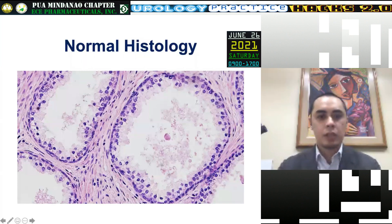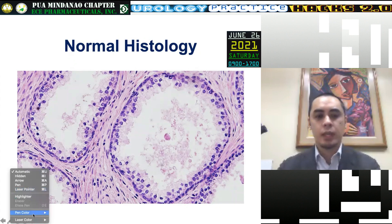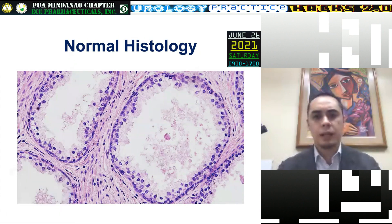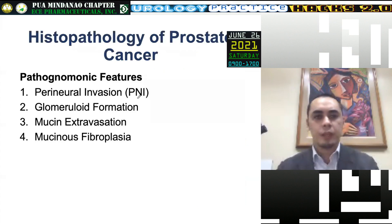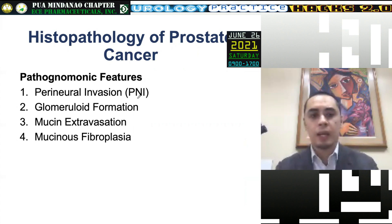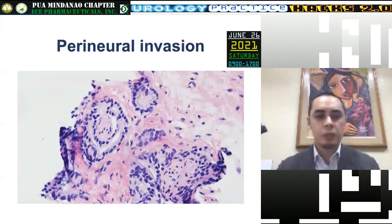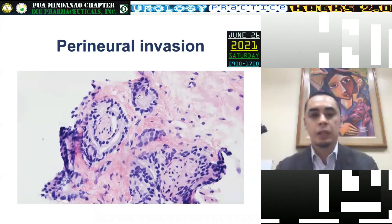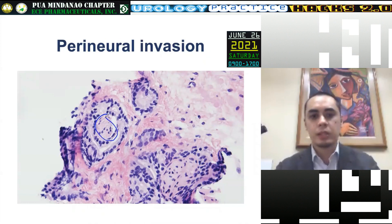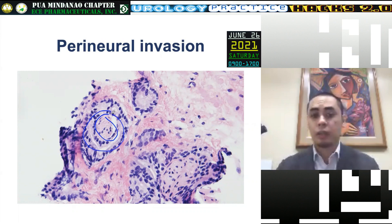We start with diagnosing small foci of atypical glands that we try to diagnose as prostatic adenocarcinoma. I always start with the normal histology of the prostate — simple glands that are sometimes undulating with two cell types: your basal cell and your luminal cell. There are certain pathognomonic features when talking about prostate cancer — these are absolute indicators of malignancy that you don't see in any benign entity. One is perineural invasion, which most urologists know as an indicator of a higher chance of extraprostatic extension. For pathologists, if we see a nerve bundle surrounded by glandular proliferation, that is an absolute indicator of malignancy.